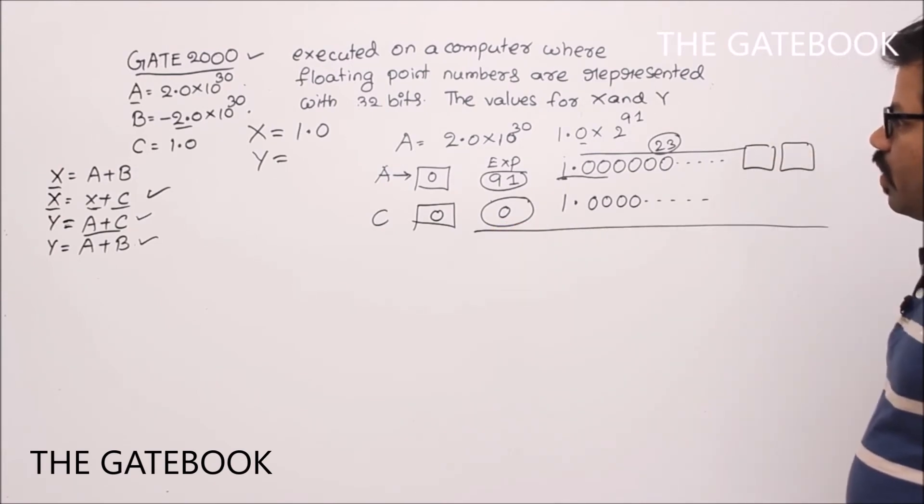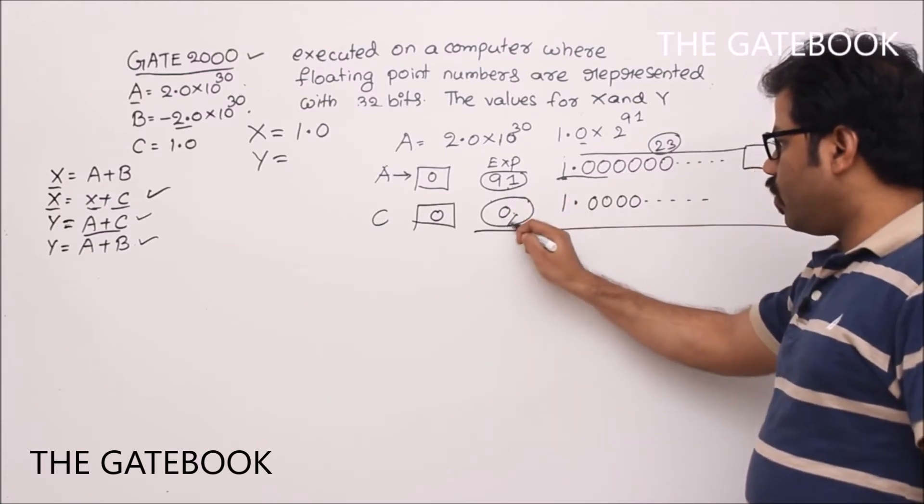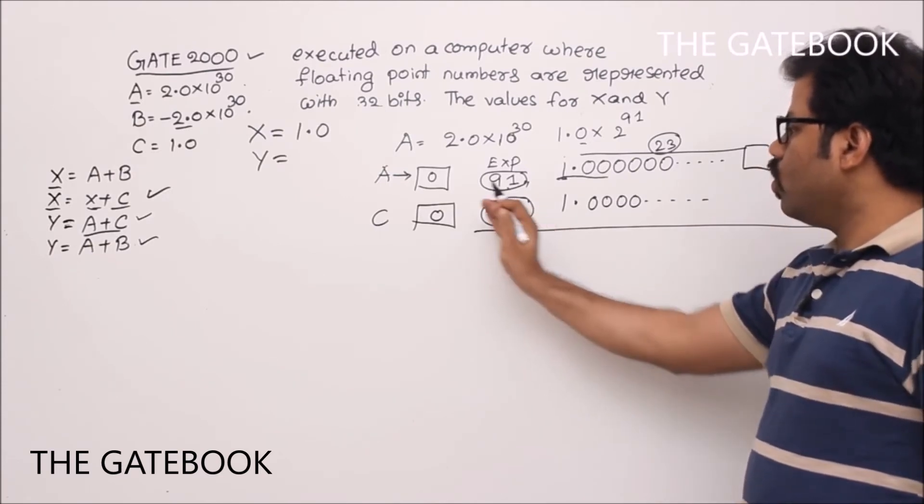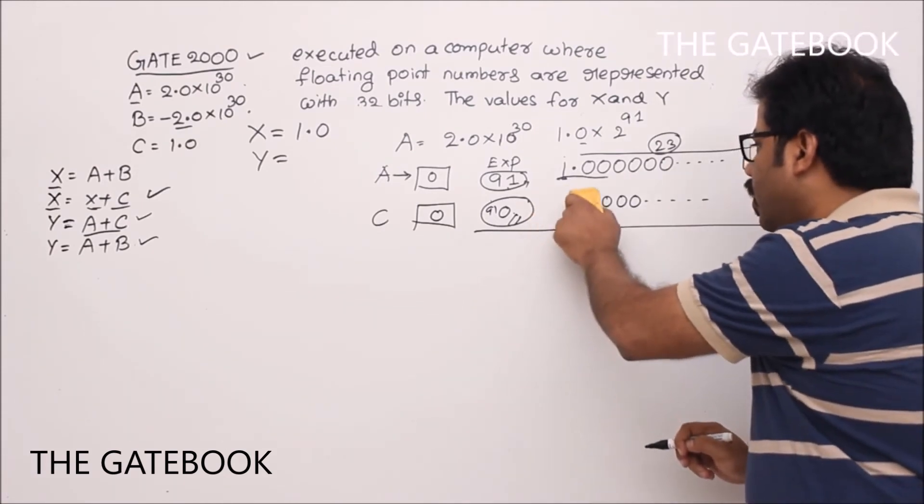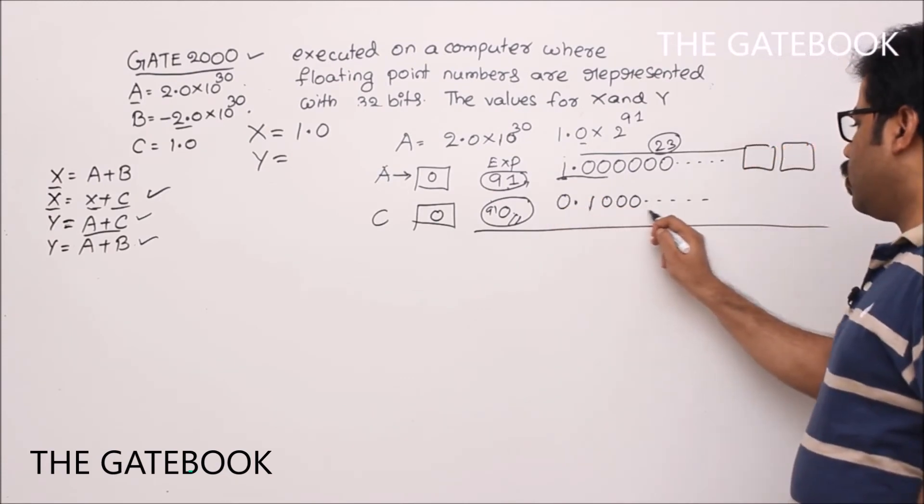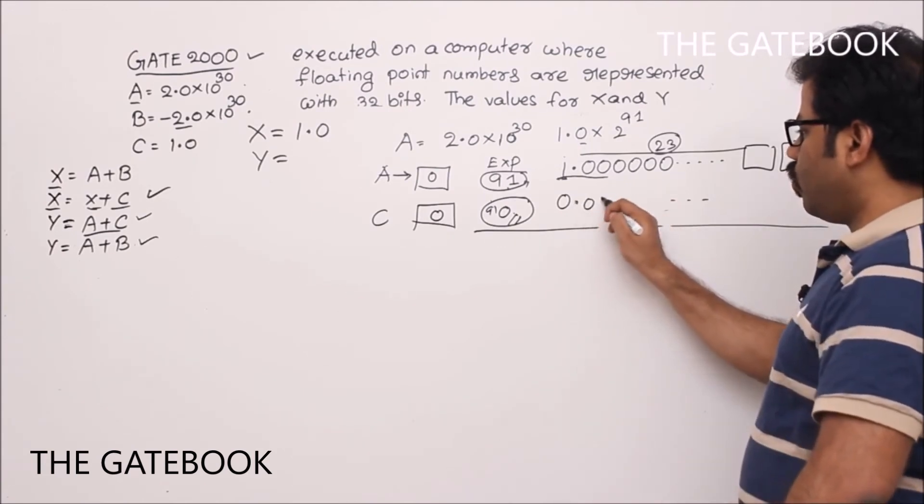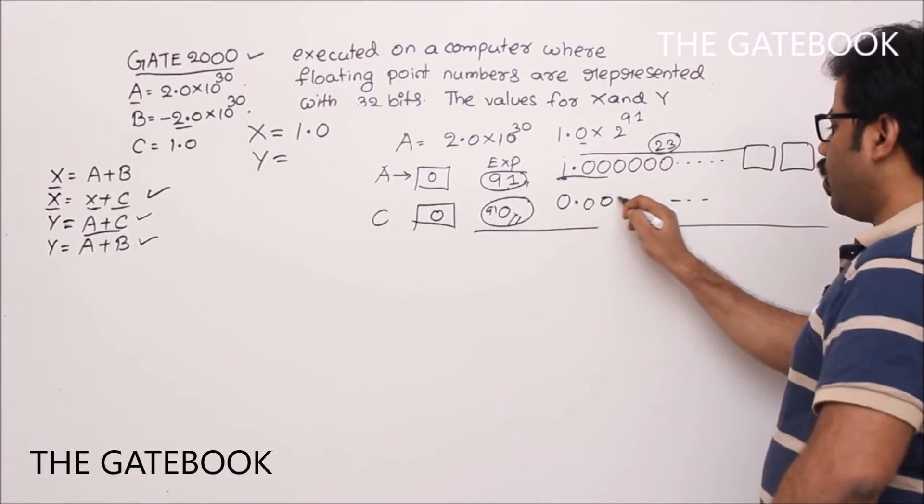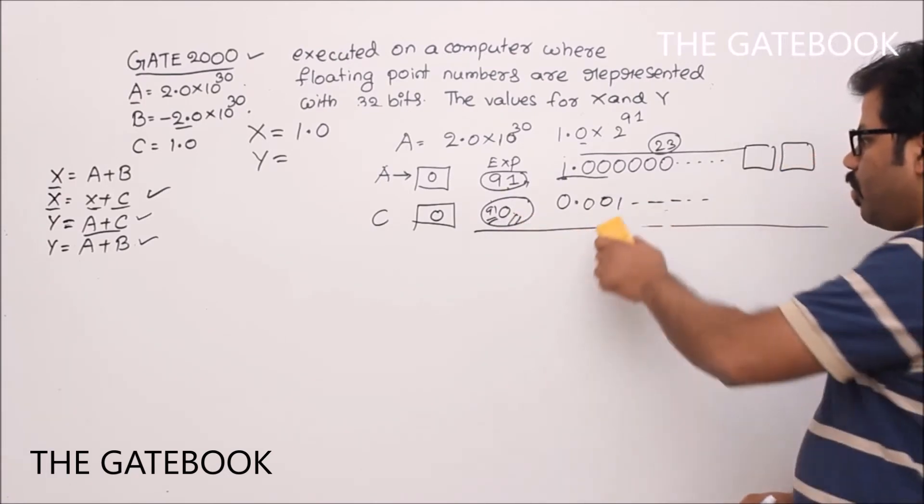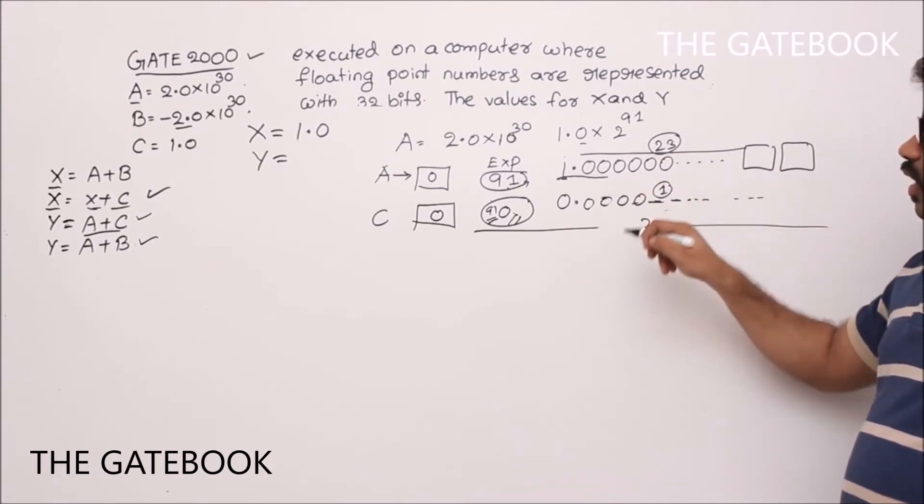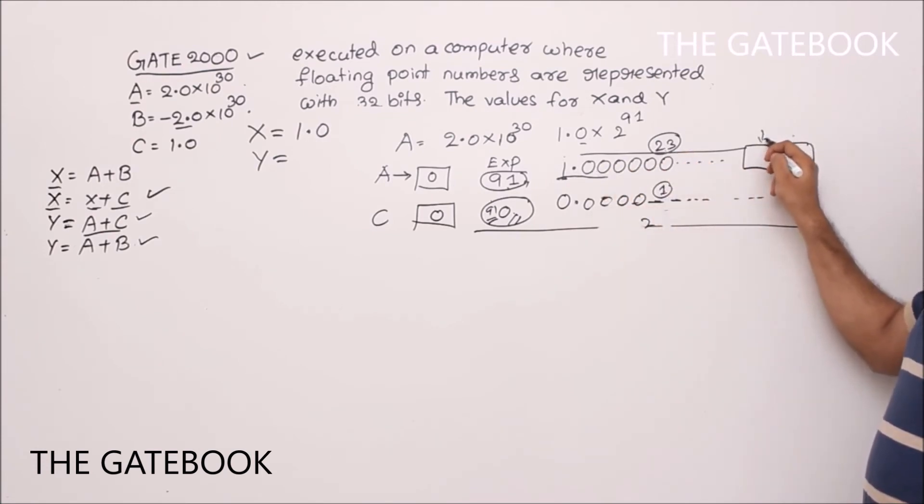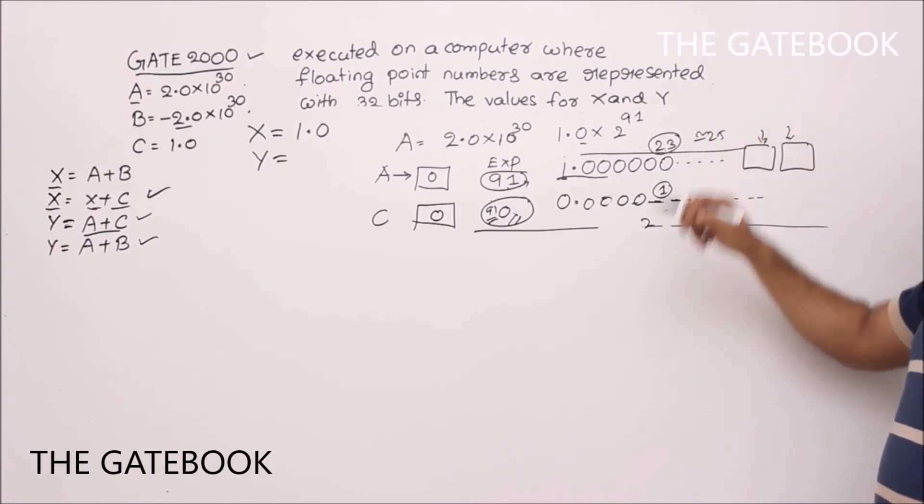So, the first step is what? A plus C, correct? To do that, exponent should be equated. You have 0 here, 91. Then, 91 times we have to right shift the mantissa of C. Then, what happens? You see, first right shift. It will become, this 1 will come here. So, 0.100, so on. First step. Second step, 0.0100, so on. Third step, 0.01, so on. If you do 91 times, then what happens? It will become, that 1 slowly will be moved, right? Every time that 1 bit is going right side. After 25 steps, because we have only 23 bits here, plus 2, 25 guard digits. 23 plus 25. After 25 rounds, approximately, after 25 times, your 1 will be disappeared, correct? Because we have only 25 digits.